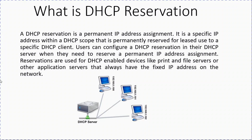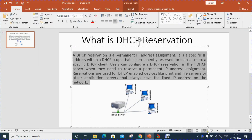What is DHCP reservation? A DHCP reservation is a permanent IP address assignment. It is a specific IP address within a DHCP scope that is permanently reserved for lease to a specific DHCP client. Users can configure a DHCP reservation in their DHCP server when they need to reserve a permanent IP address assignment. Reservations are used for DHCP-enabled devices like print and file servers or other application servers that always have a fixed IP address on the network. So I am going to configure DHCP reservation in my lab.